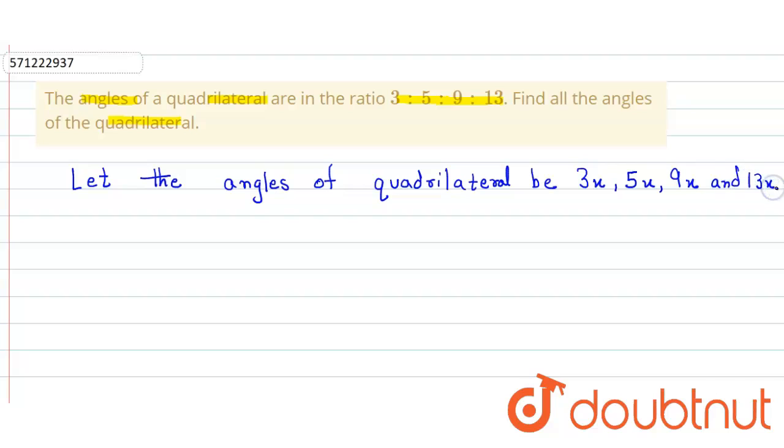We know that the sum of all angles of a quadrilateral is equal to 360°. So the sum of all angles is equal to 360 degrees.